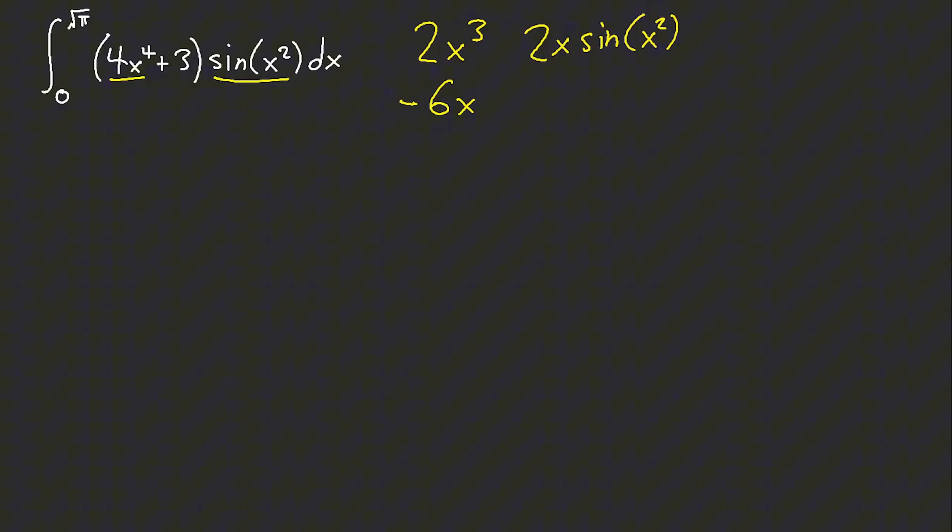Remember, when we do integration by parts, the sign alternates. Here, you get negative cos(x²). Okay, cool.